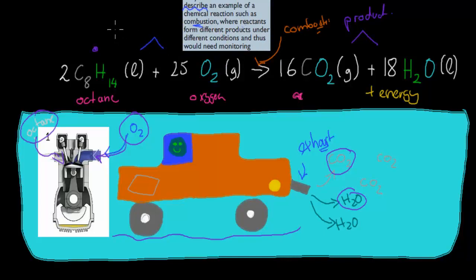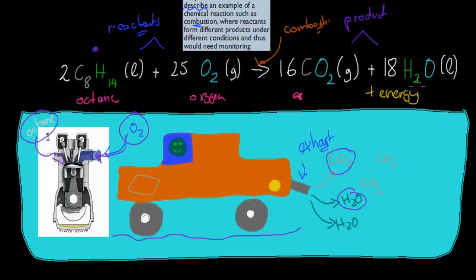These are our reactants: we've got octane and we've got oxygen. And here we have the products — carbon dioxide and water. Now I'll show you what happens if we have a different type of condition.